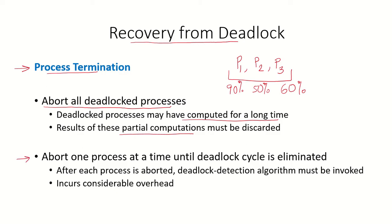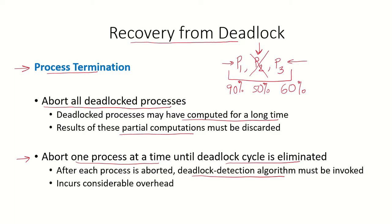Another way of handling it is to abort one process at a time until the deadlock cycle is eliminated. Out of these deadlocked processes one process will be chosen to be aborted, and after it has been aborted a deadlock detection algorithm will be invoked again to check whether the remaining processes are deadlocked or not. If the deadlock is still existing then another process will be chosen. So initially let's say P2 has been chosen to be aborted. Once P2 has been aborted the deadlock detection algorithm will run to check whether P1 and P3 are still in a deadlocked state or not. If they are not in a deadlocked state then it is okay, but if they are, again one process will be chosen and so on.